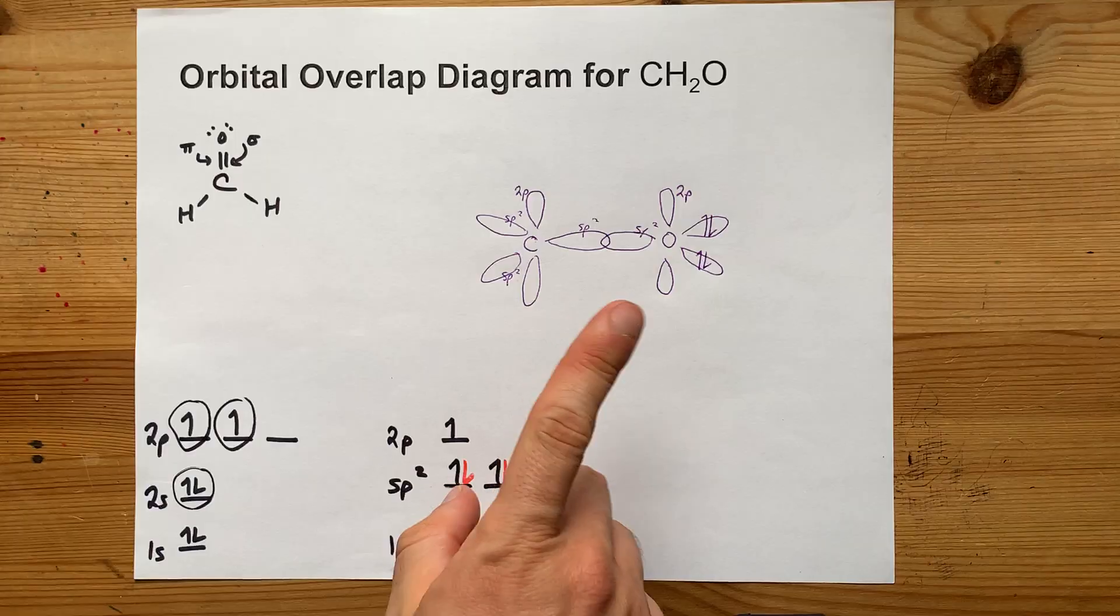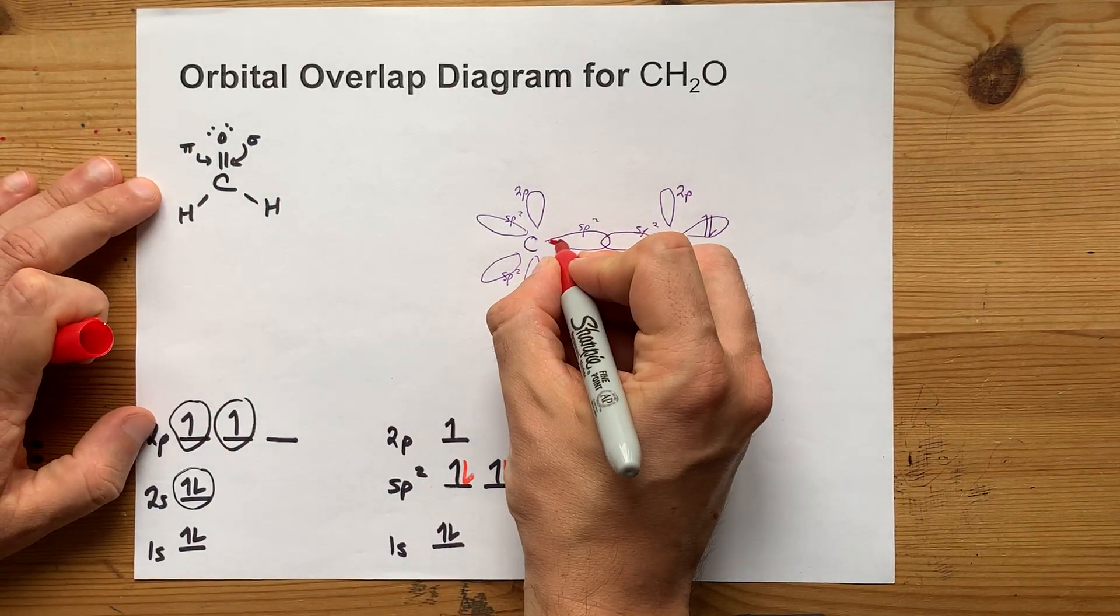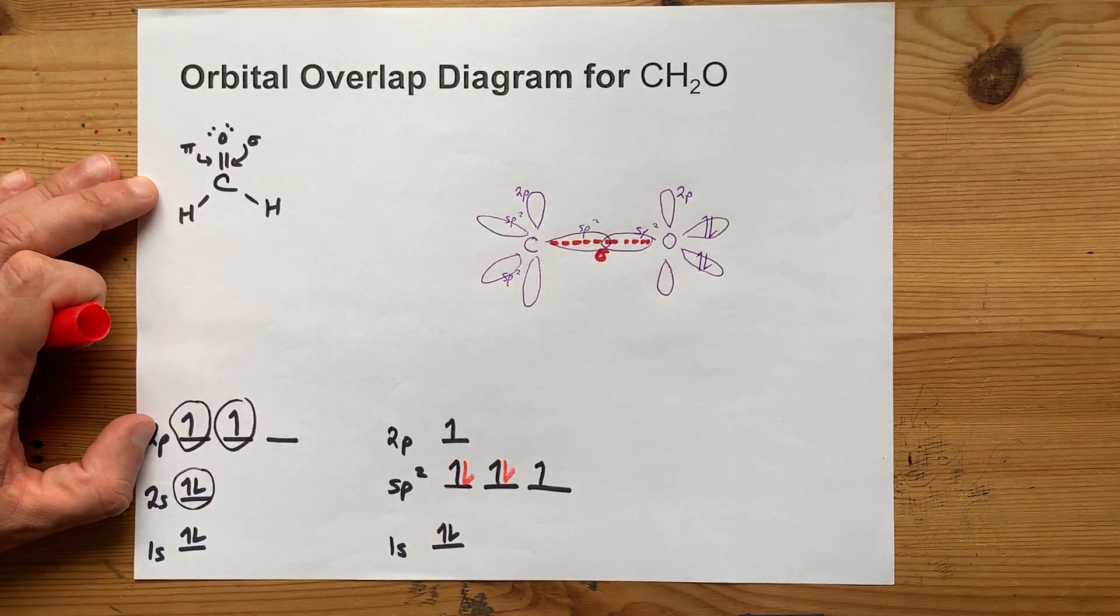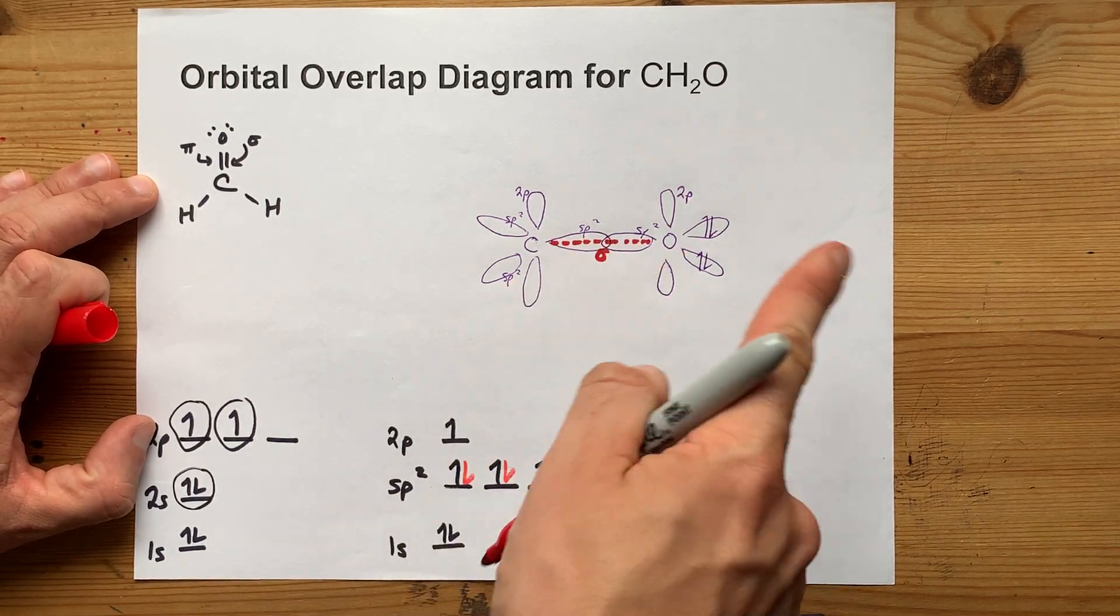To be clear about the bonding between these two atoms, the overlap of the sp² hybridized orbitals is what gives you a sigma bond along the bond axis.